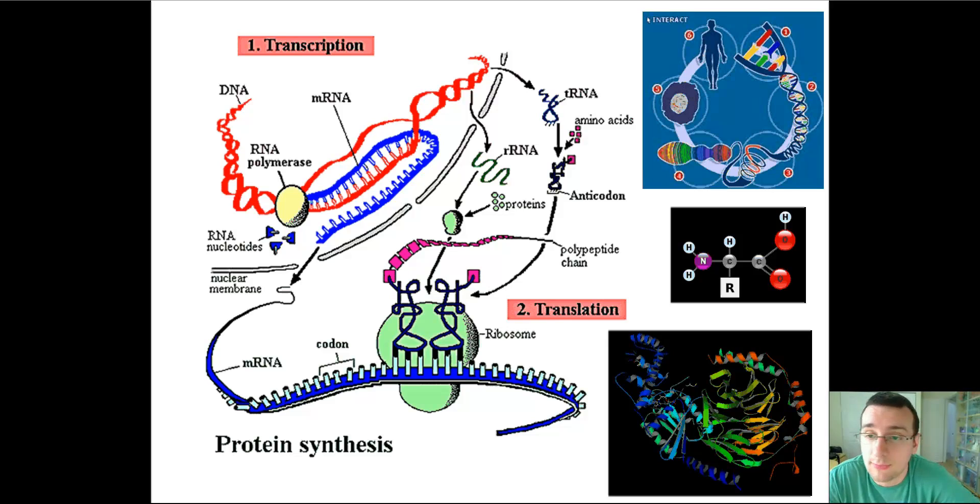Especially when you consider from the last video that you need proteins to stabilize the structure and replication process of the DNA molecule. But either way, one thing is for sure. The information that comes to make proteins comes from DNA. The same way the genotype determines phenotype, DNA determines proteins.